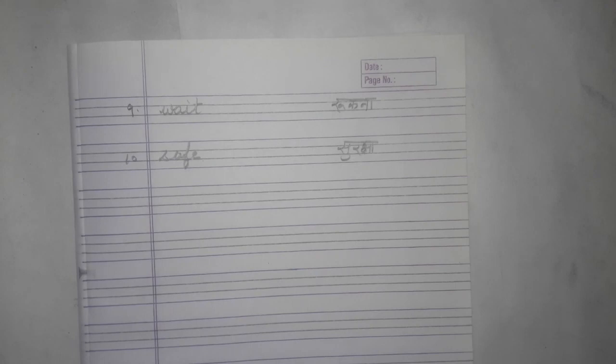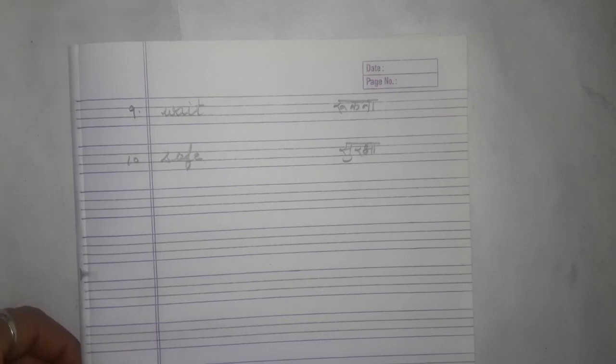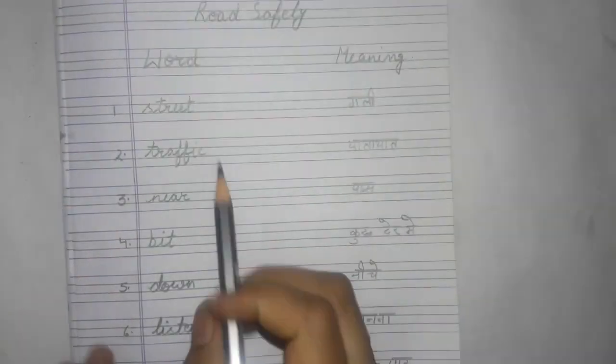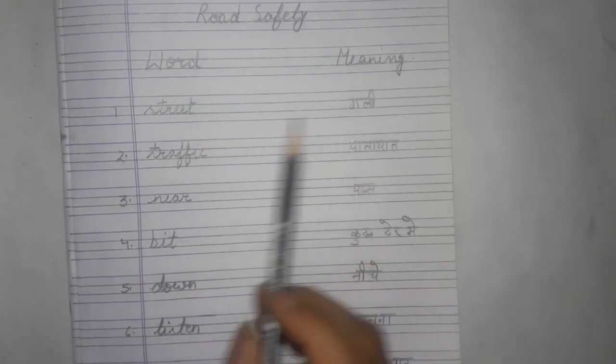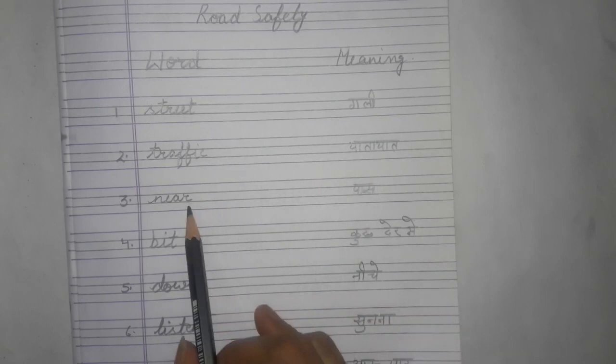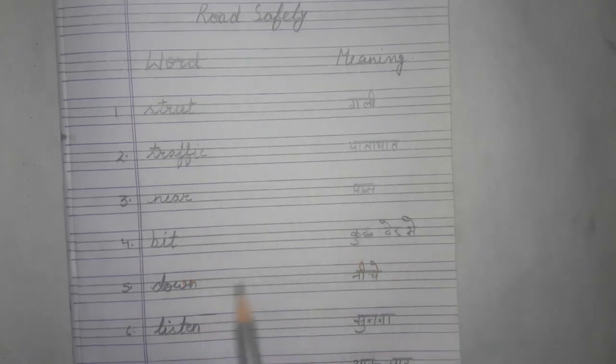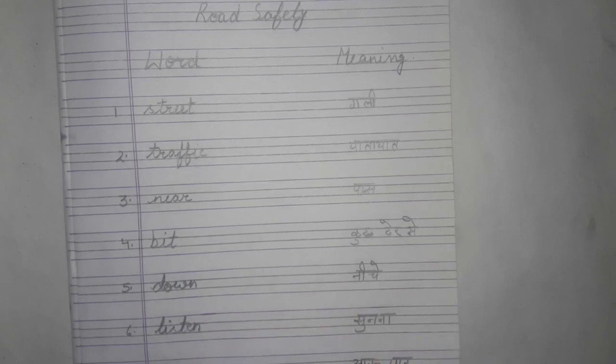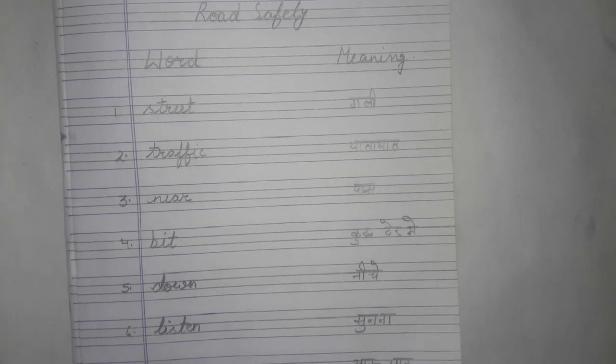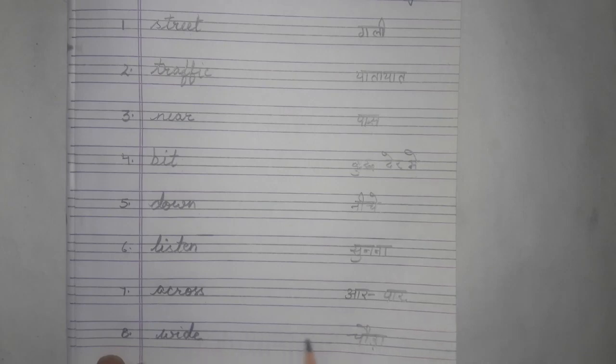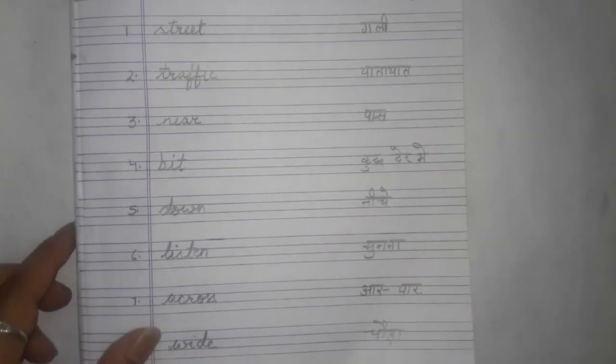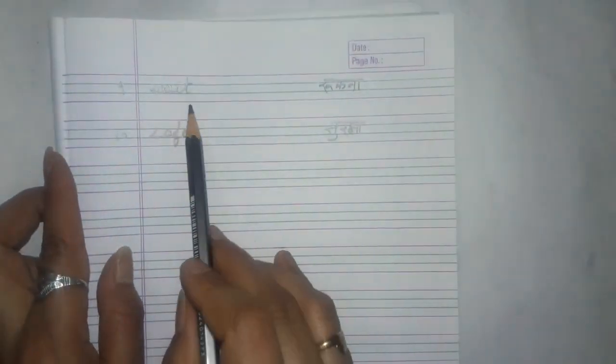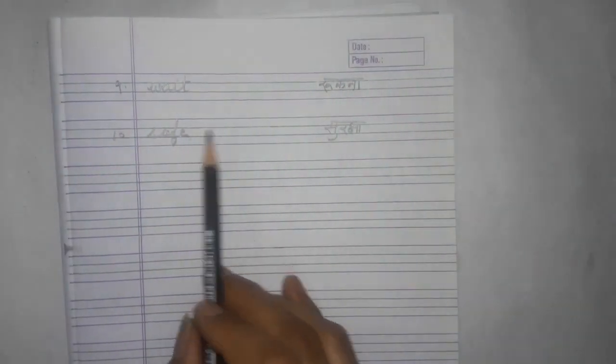I hope aap sab ko word meaning samajh mein aayi honge. Let's recall once again. Street gali, traffic yata yaat, near pass, bit kuch der mein, down niche, listen sunna, across aar par, wide chora, wait rukna, safe surakshah.